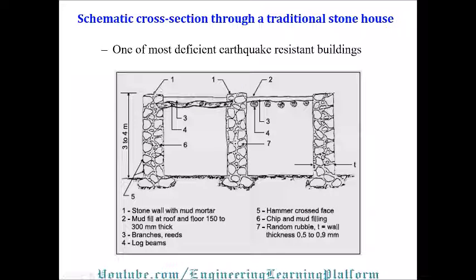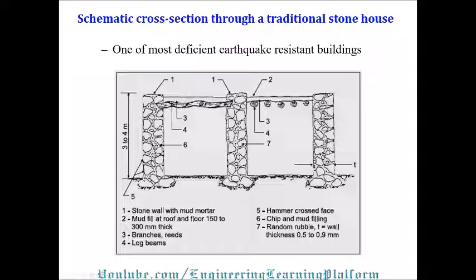Component one is the stone wall with mud mortar. Component two shows a mud fill at roof and floor, 150 to 300 millimeters thick. Component three includes branches and rods. Component four includes log beams. Component five includes hammer-dressed face stone cladding visible from the exterior. Component six is chip and mud fill. Component seven is random rubble, where wall joining is created by limestone mortar or clay in rural areas.